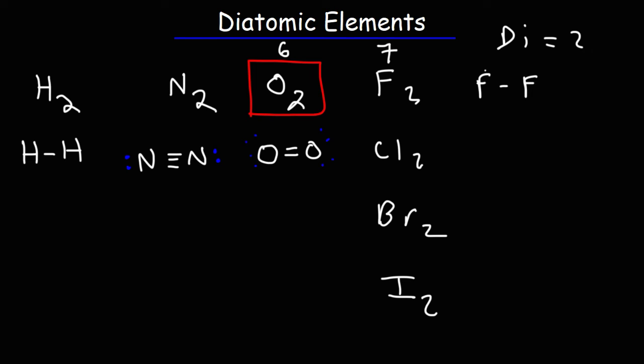So the halogens have a very similar Lewis structure. Cl2, Br2, I2, they look very similar. Each of them have three lone pairs.